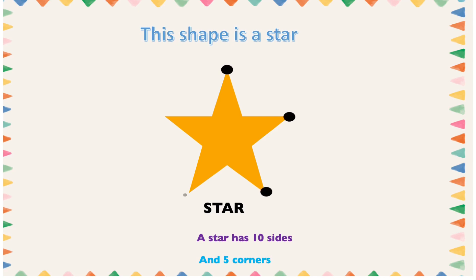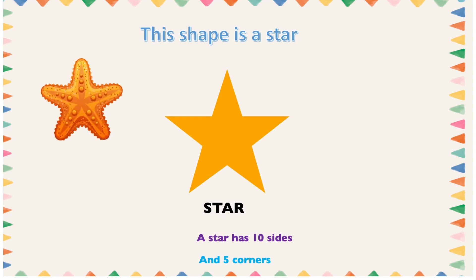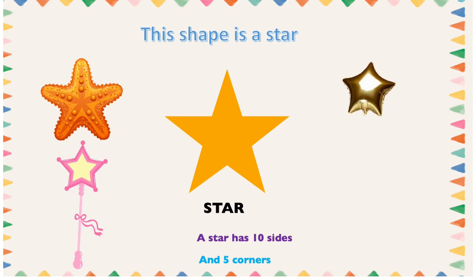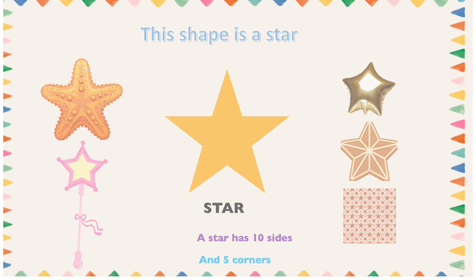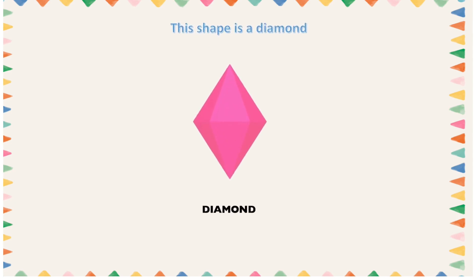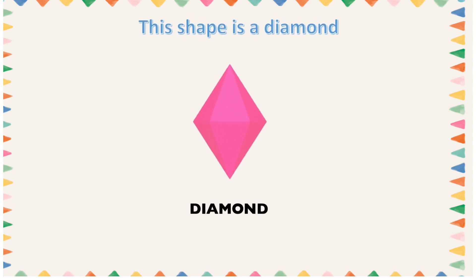It also has five corners: one, two, three, four, five. We can find objects with a star shape — objects such as a jellyfish star, a star balloon, a star cookie, and it can also be in the form of a clock design. All these objects have a star shape.